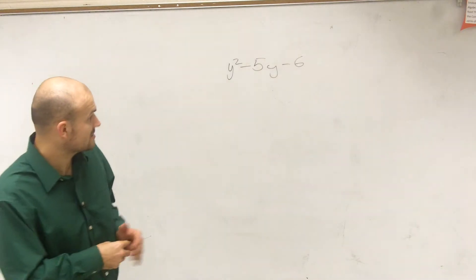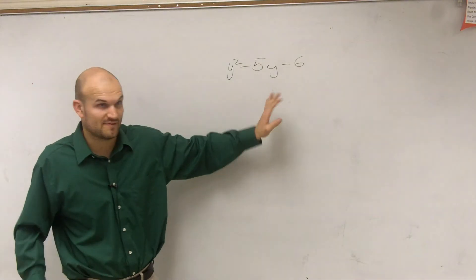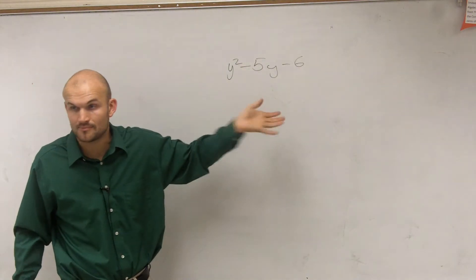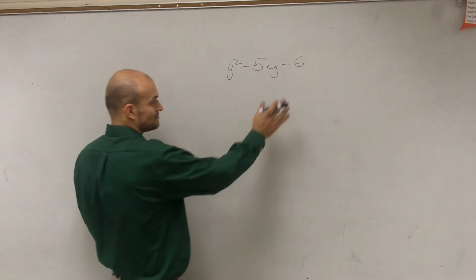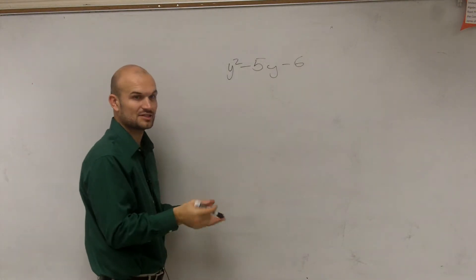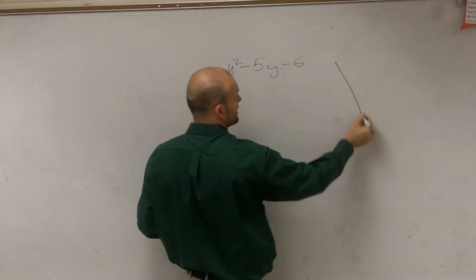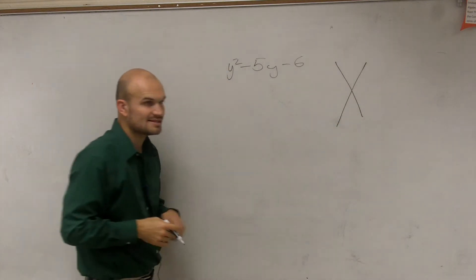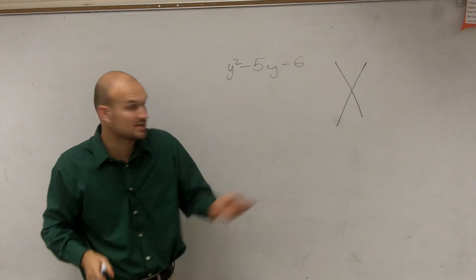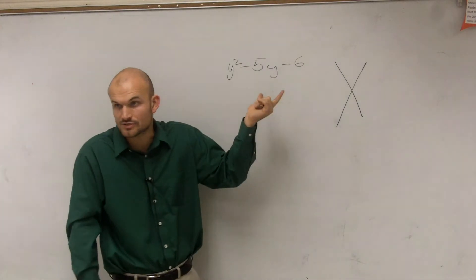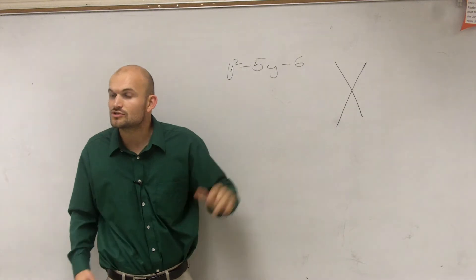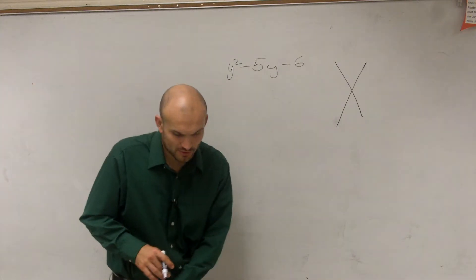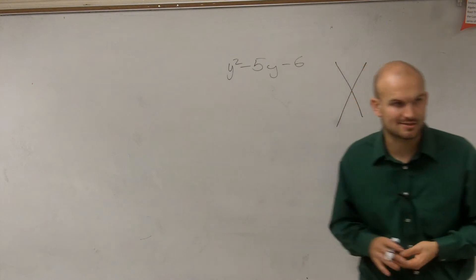Now one thing I notice about this is they don't have any GCF. I can't factor out a GCF for this problem. So what I'm going to do, I need to be able to find, to be able to get the factors of this, what I can do is I can create an X. And the X is going to help me find the factors, because right now we know they don't have any common factors. We can look up here and say there's nothing I can factor out. So what we're going to do is we're going to use this kind of technique to help us find the factors.